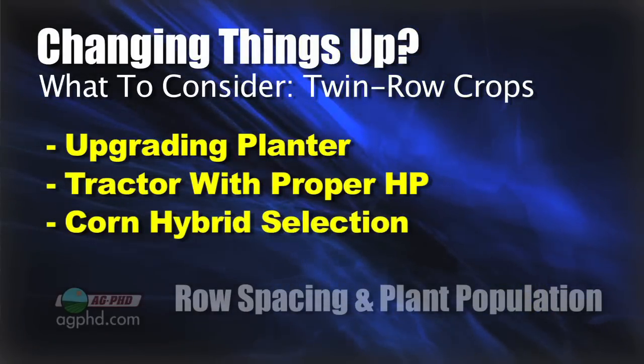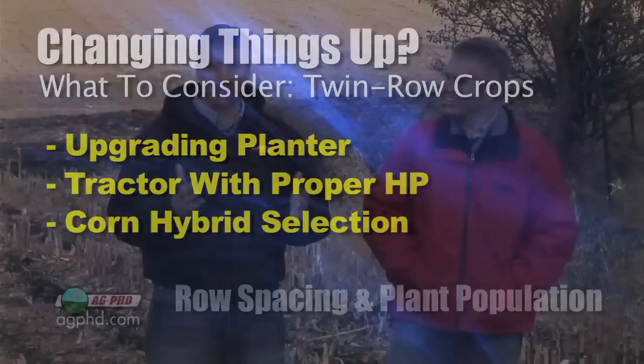It sounds like you've got your decision all made up. Twin rows are appealing because we don't have to switch everything over — we can stay on our 30-inch row spacing and a lot of our equipment will still work through that twin row. But what are you going to do for a planter? We've got a 60-foot planter right now.